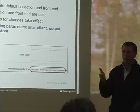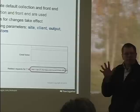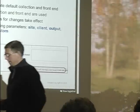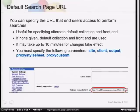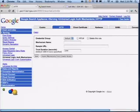The client parameter has to be set. There are only about five required parameters — you can figure them out by experimenting and removing one at a time. Proxy stylesheet and proxy custom are optional.